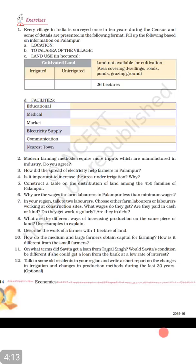Question ten: How do medium and large farmers obtain capital for farming? How is it different from small farmers? Chapter mein padha hai there are three types of farmers: large farmers have huge land, medium farmers have less, and small or landless farmers have very less or no land. In teeno mein kya difference hai, kaise apni capital — yaani paisa — obtain karte hain, aur farming process kaisi hoti hai, yeh batana hai.